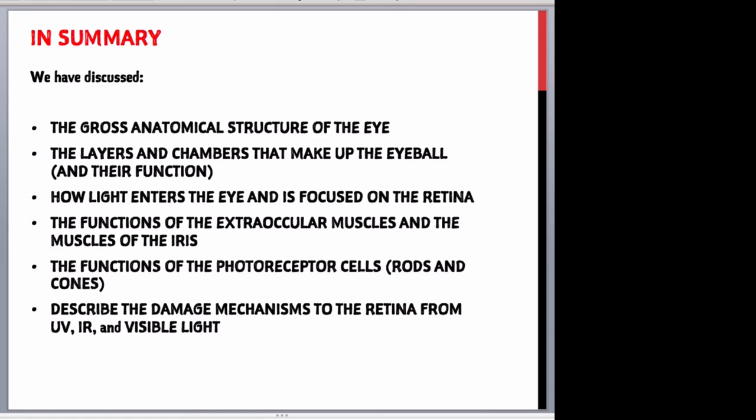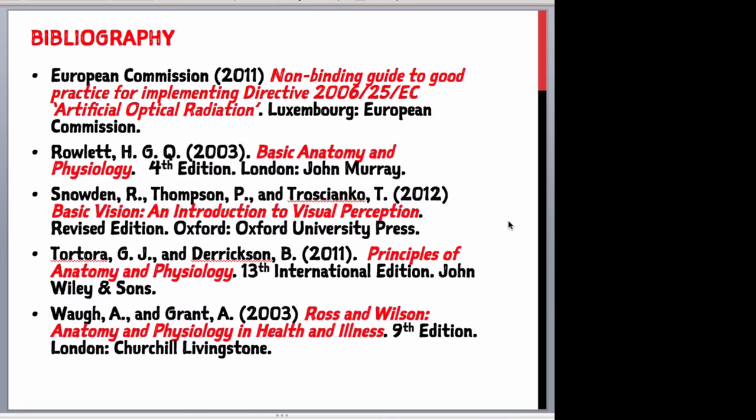In summary, we have discussed the gross anatomical structure of the eye, the layers and chambers that make up the eyeball and their function, how light enters the eye and is focused on the retina, the functions of the extraocular muscles and the muscles of the iris, the functions of the photoreceptor cells (rods and cones), and the damage mechanisms to the retina from UV, IR and visible light. This is the bibliography of the main texts used to construct this presentation, which I would recommend you look at to further enhance your knowledge of the anatomy of the eye.